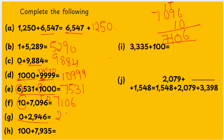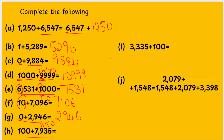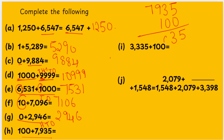Next: 0 plus 2,946 is 2,946 — if you add anything with 0, the number is the answer. Then: 100 plus 7,935. Which place do you need to change? The 100th place. So: 5 plus 0 is 5, 3 plus 0 is 3, 9 plus 1 is 10, 7 plus 1 is 8. So the answer is 8,035.